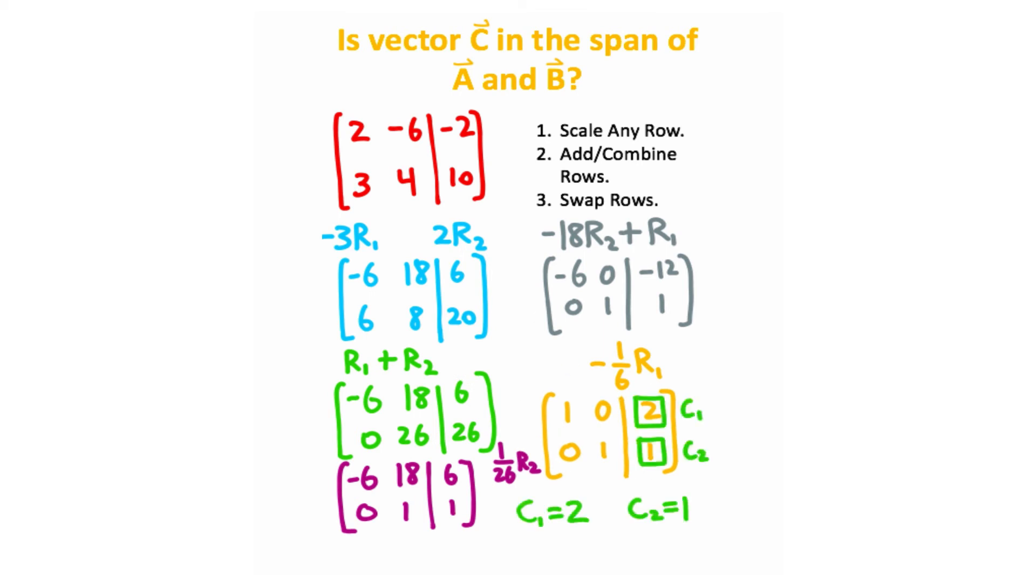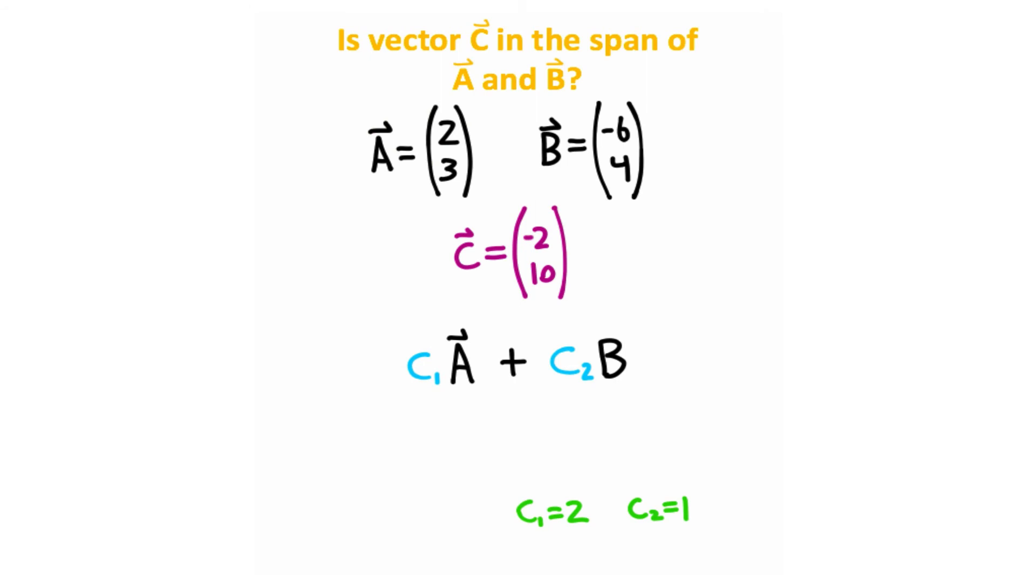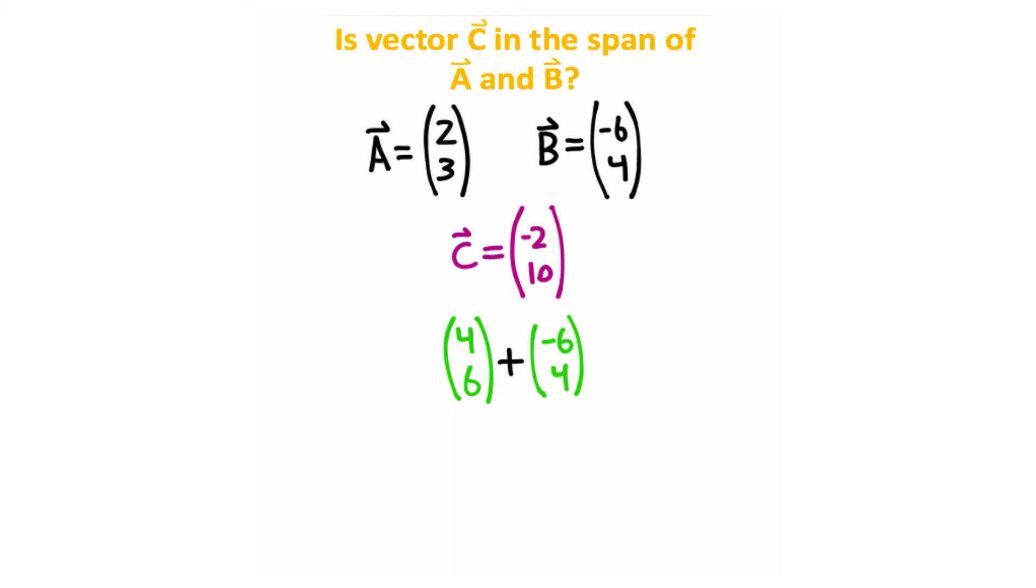So let's see if these two solutions work. What I'm going to do is take C1 and C2 and plug it into this combination. I'm now going to take the two vectors and scale them by the corresponding constants and then add the components together. When I do that, I should get negative two and ten. And notice here that the two vectors match. That means that we are in the span of A and B. So vector C is a linear combination of A and B, and therefore is in the span of A and B.